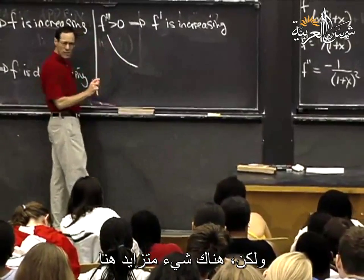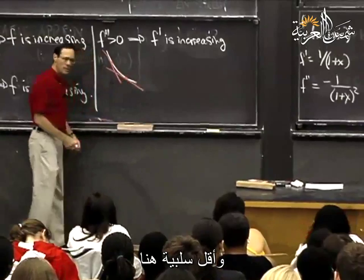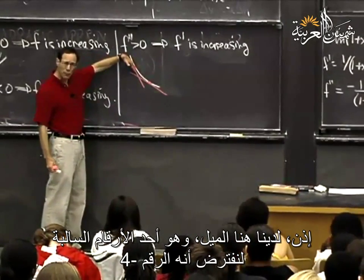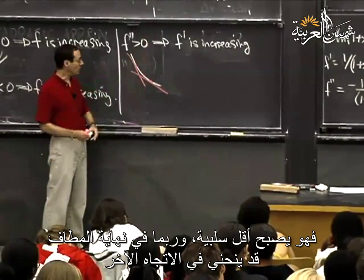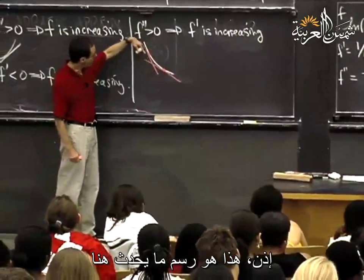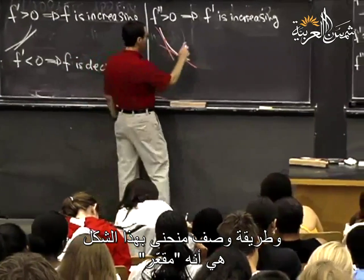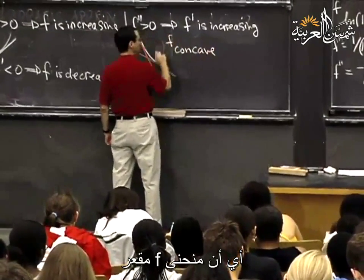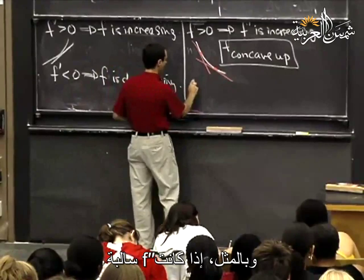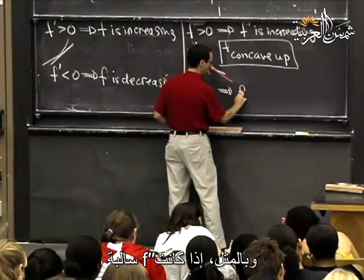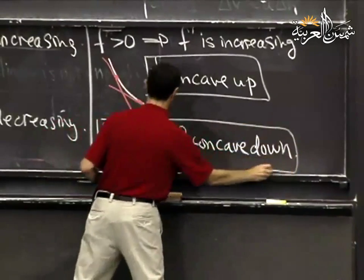If f'' is positive, f' is increasing, and the curve is concave up. If f'' is negative, f is concave down. These are the ways in which derivatives help us qualitatively draw graphs, but we still have to use a little bit of common sense — these are just the additional bits of help from calculus.